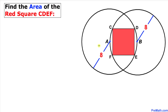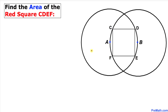Welcome to PreMath. In this video tutorial we have two identical circles with radius 8 that intersect each other at two distinct points, as you can see in this figure. We are going to calculate the area of the red square CDEF. Let's go ahead and get started with the solution.